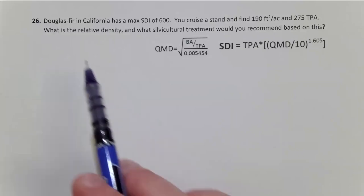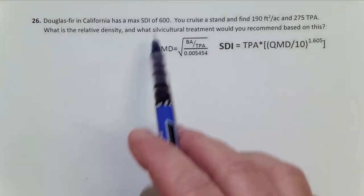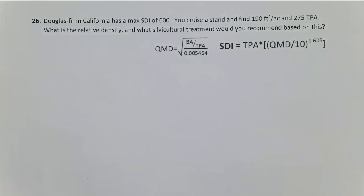In problem 26, we've moved out of the south. Now we're looking at Douglas fir in California, and we don't have those SDIs in our tables, so it's been provided. 600 is the max SDI for 10-inch trees per acre.